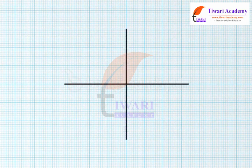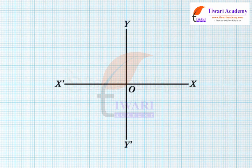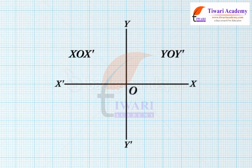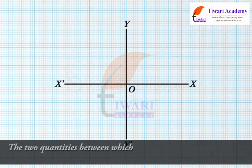Take a sheet of graph paper and draw two lines perpendicular to each other. Mark the horizontal line as XOX — it is known as the x-axis. Similarly, mark the vertical line YOY — it is called the y-axis. The point of intersection of XOX and YOY is known as the origin O.